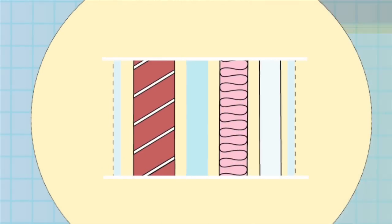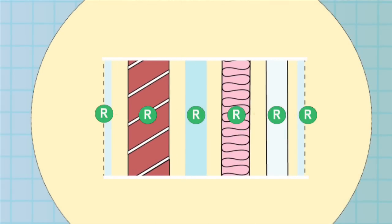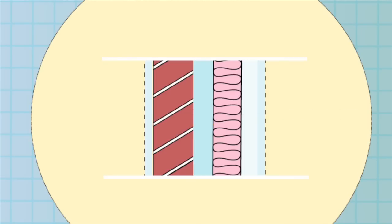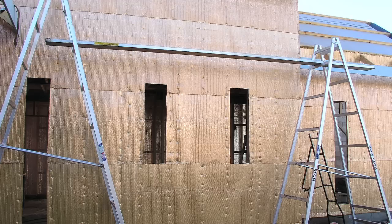The regulations might ask for a system R value or an added R value, so you need to know the difference. The timber, brick, and plasterboard also have an R value, which can be added to the R value of the insulation to give a system R value. The R value of the insulation itself is called the added R value. Only system R values are quoted for reflective insulation, as it depends on how and where it is installed.